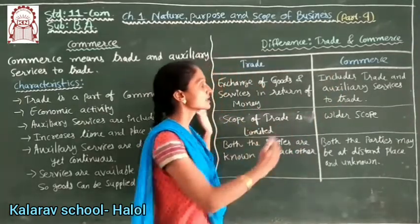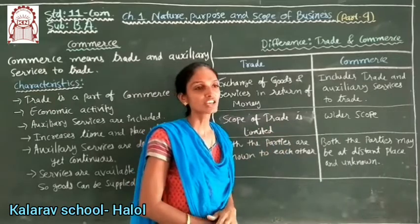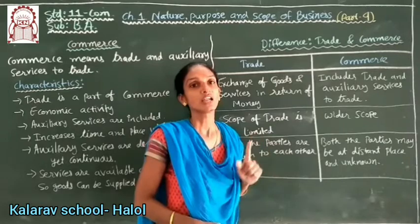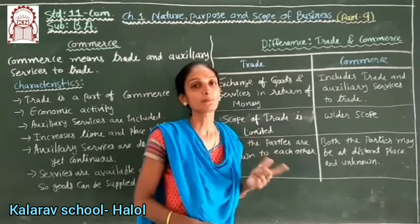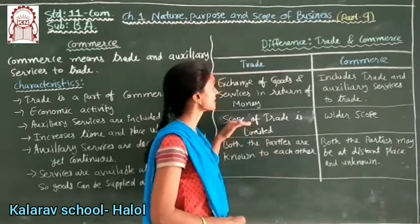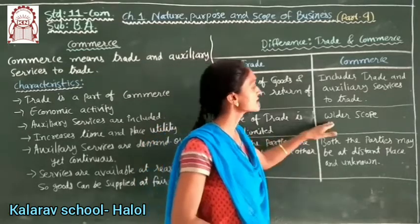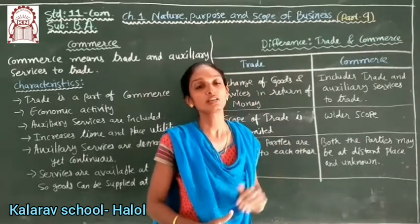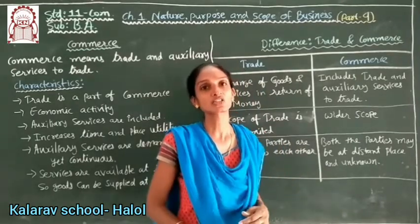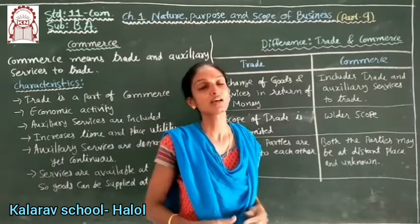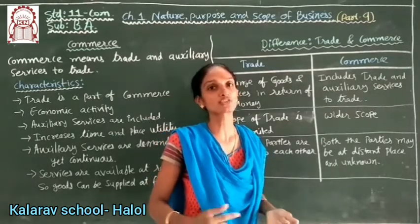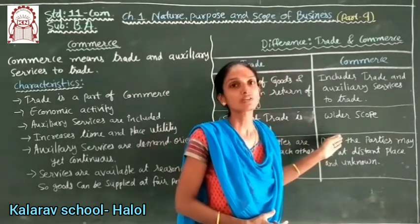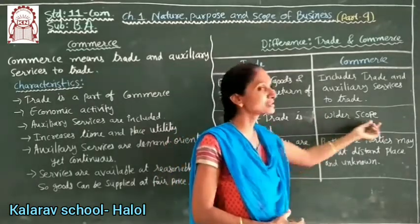The scope of trade is limited — it only covers the exchange of goods, i.e., import, export, and re-export. These are all trade activities. Commerce, on the other hand, has a wider scope. Besides import, export, and re-export, it also includes auxiliary services to trade — banking, insurance, godowns, and transportation — all of which support trade. Without these, trade is not possible. That is why commerce has a wider scope.